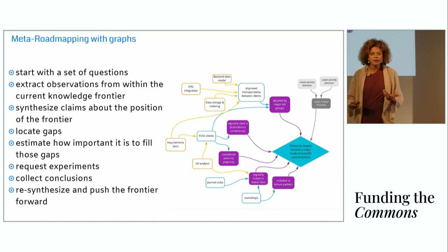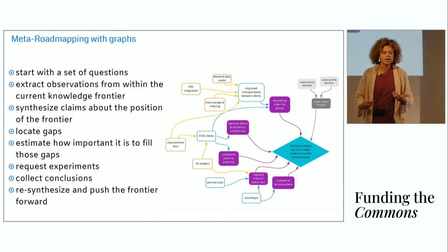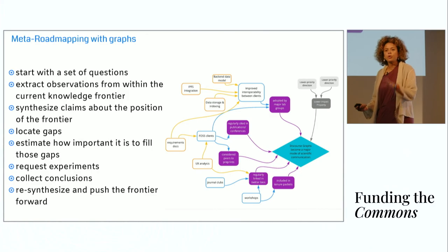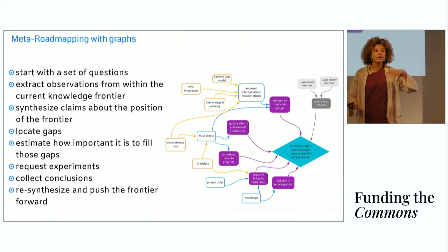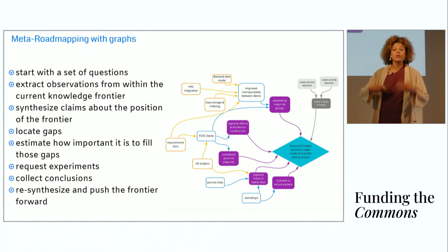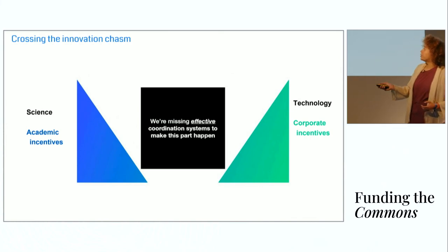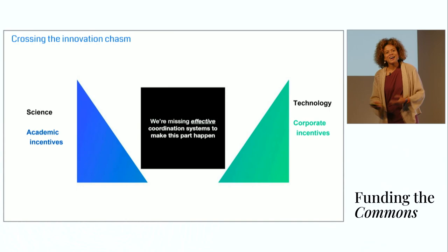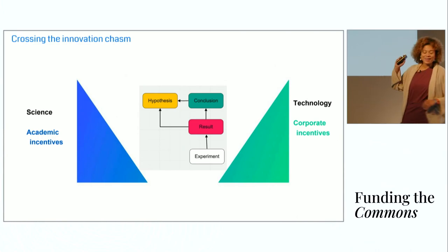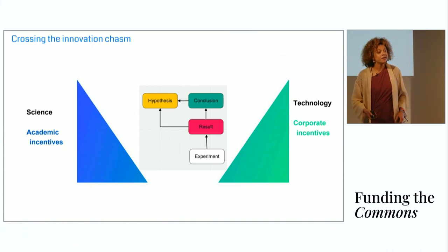We can see that there's a bit of similarity and complementarity in the way that we build discourse graphs and the way we build research roadmaps. We start with a set of questions, start working with the current knowledge frontier, synthesize claims about its position, locate gaps in the frontier, estimate how important it is to fill those gaps in a comparative way, request experiments to fill the gaps, collect conclusions, re-synthesize all of our data, push the frontier forward, and then start with new and better questions. And I think I'm contractually obligated to show this particular slide, crossing the innovation chasm. We are missing effective coordination systems to make this part happen. Juan has mentioned this several times. I think I'm going to cheekily drop in the results graph protocol. It is a small but significant contribution to the types of coordination systems that we'd like to see built to move science forward and to coordinate activity around a research goal.